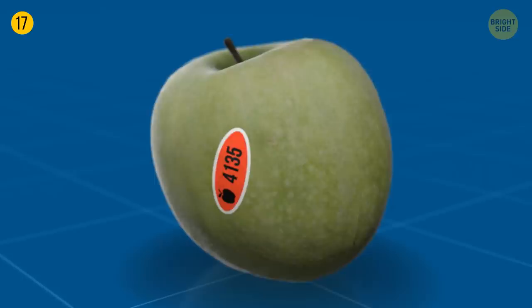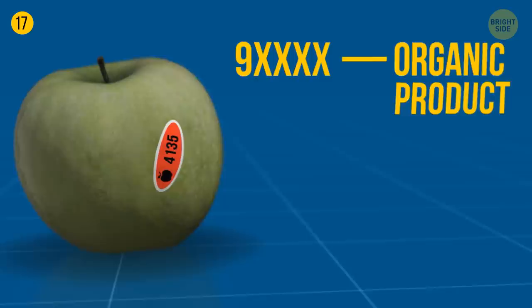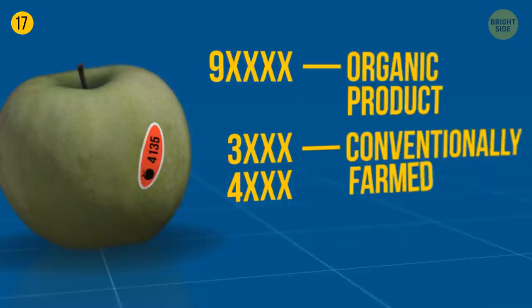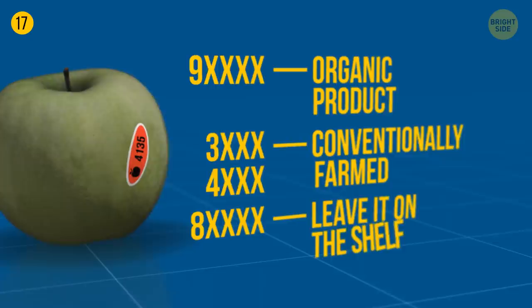Fruit stickers know everything about your apple's past. A five-digit number where the first number is nine is a good sign. It's an organic product. A four-digit number starting with three or four means it was conventionally farmed. If the number starts with an eight and there are five digits, it's best to leave it on the shelf.